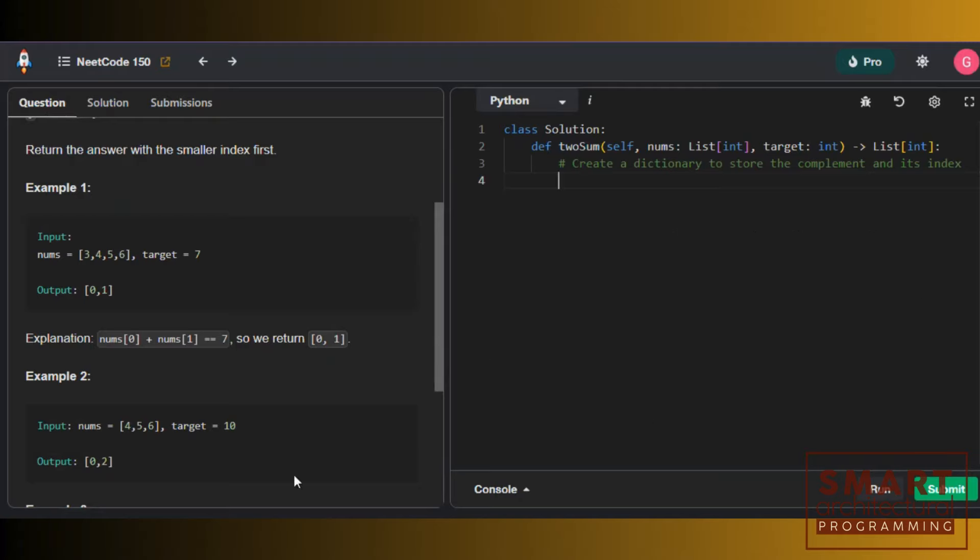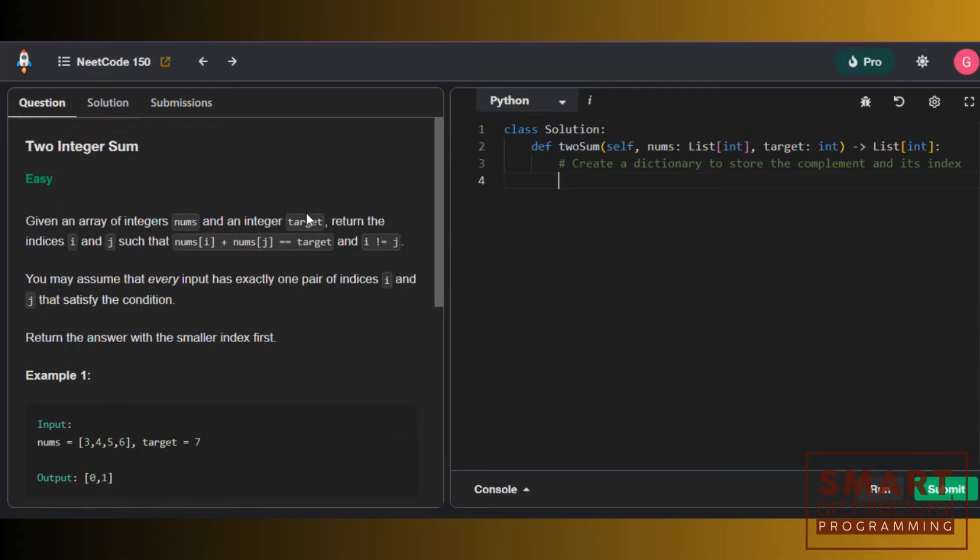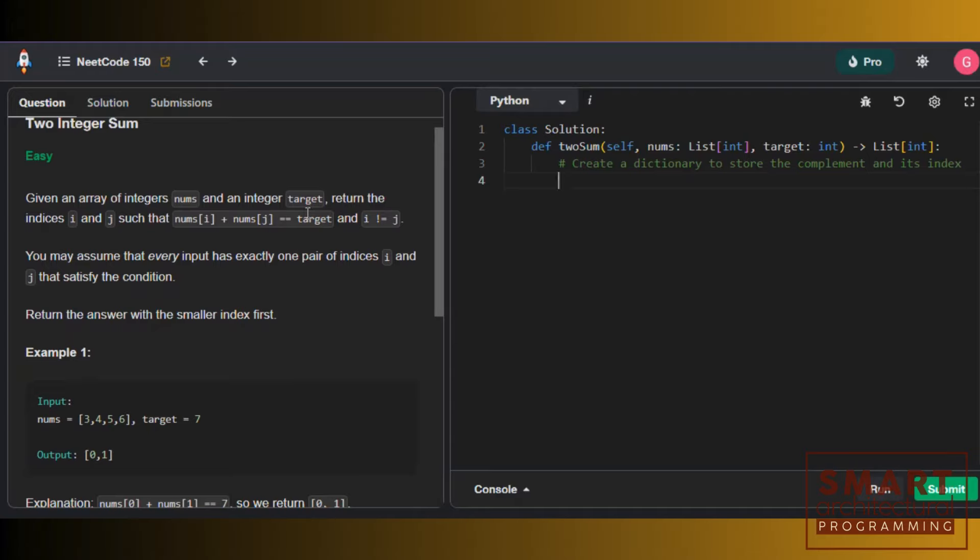With that, let's start focusing on this problem. This problem is called the Two Integer Sum. You're given an array of integers or numbers and an integer called target.